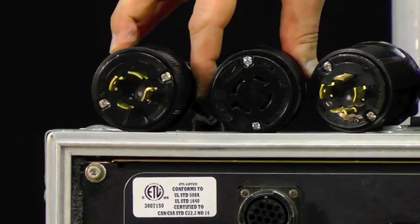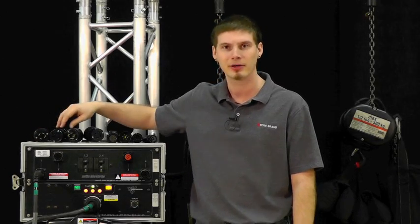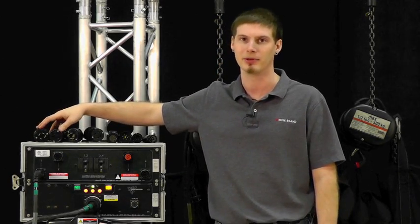First we have the dual twist lock, one of the most common types of power connectors out there. This separates the power and signal into two separate cable runs.